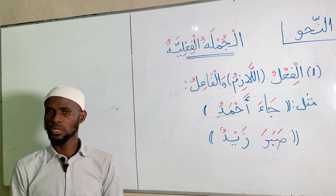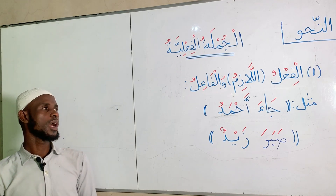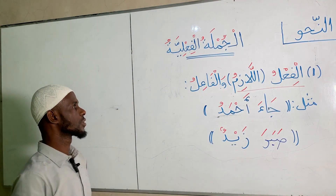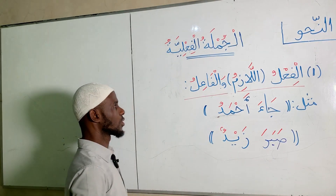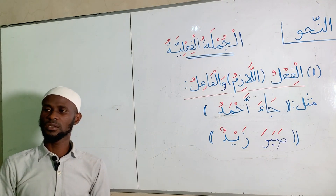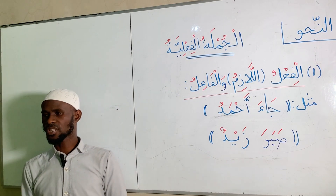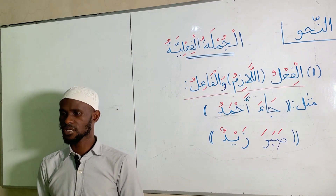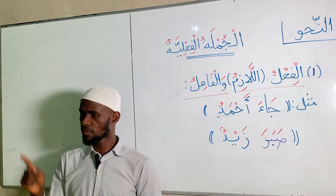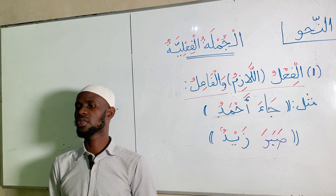So we have two major important formations we are going to look at today. The first one is al-fi'lul-lazim. Let's say it together: al-fi'lul-lazim wal-fa'il. Al-fi'lul-lazim means the intransitive verb, while al-fa'il means the subject. So what we are saying is that for you to have a verbal sentence, you have to have the action starting the sentence and somebody must be responsible for that particular action. And that is the subject.